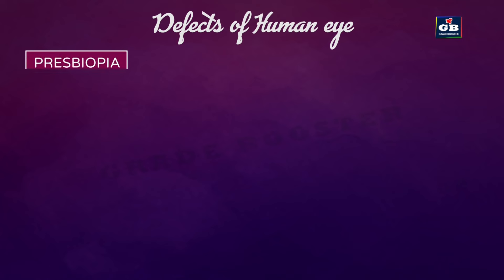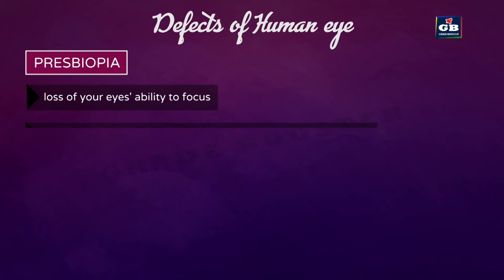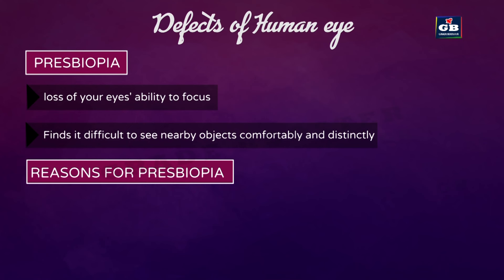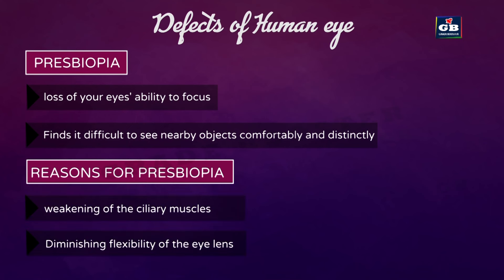Presbyopia is the gradual loss of the eye's ability to focus on nearby objects. Persons find it difficult to see nearby objects comfortably without corrective eyeglasses. This defect arises due to the gradual weakening of the ciliary muscles, which cannot contract and relax properly, making it difficult to focus on nearby objects.